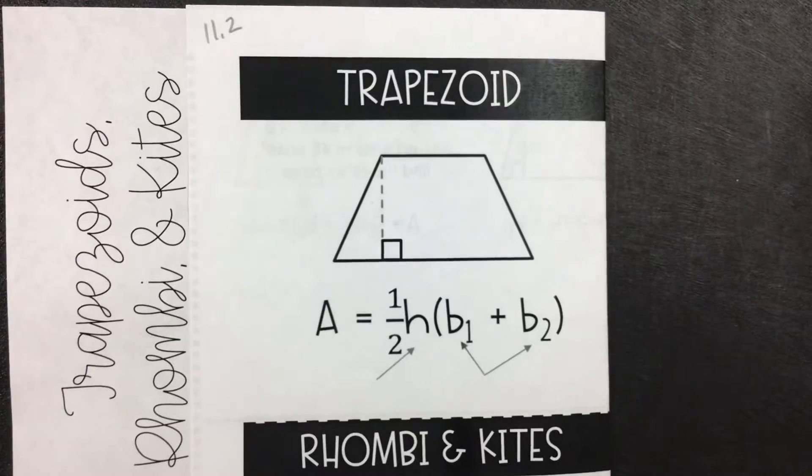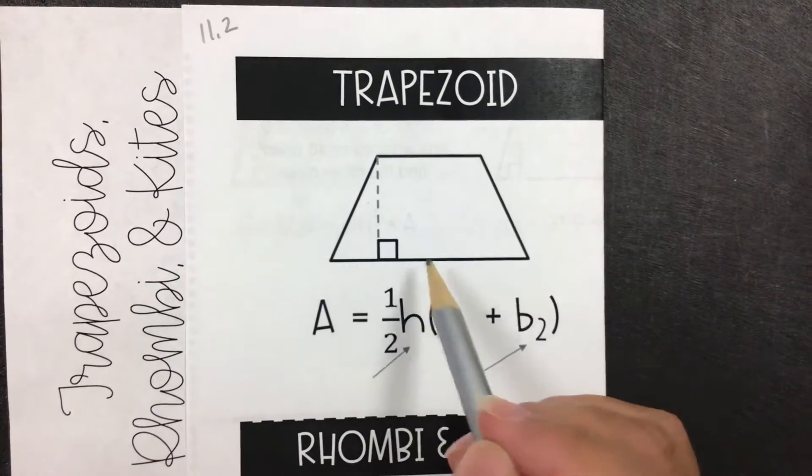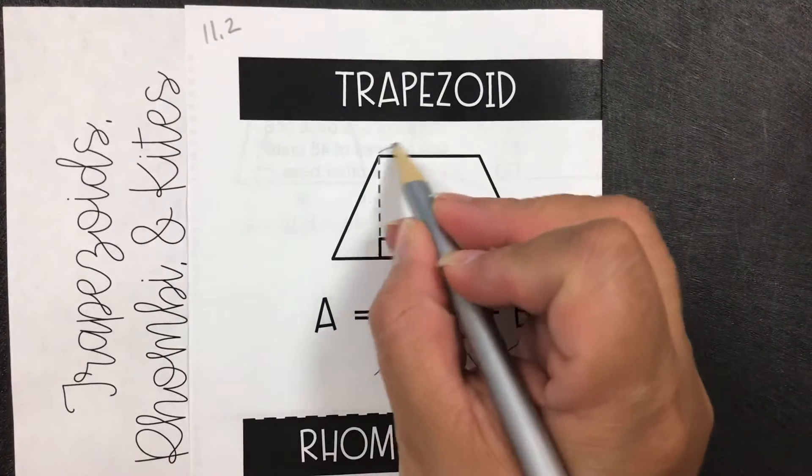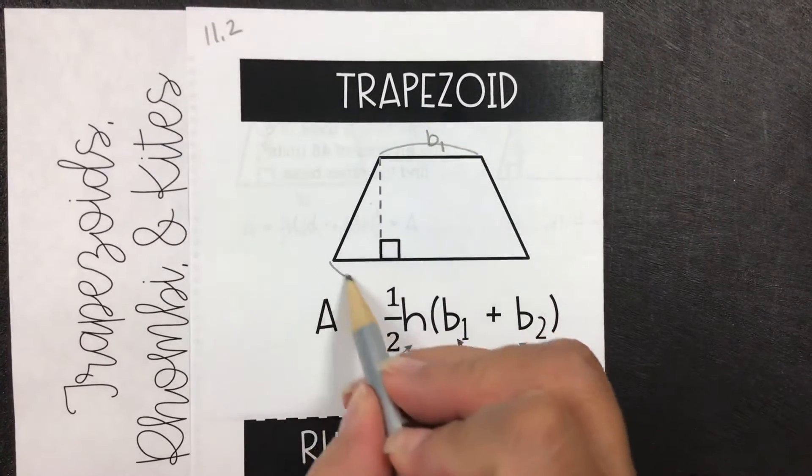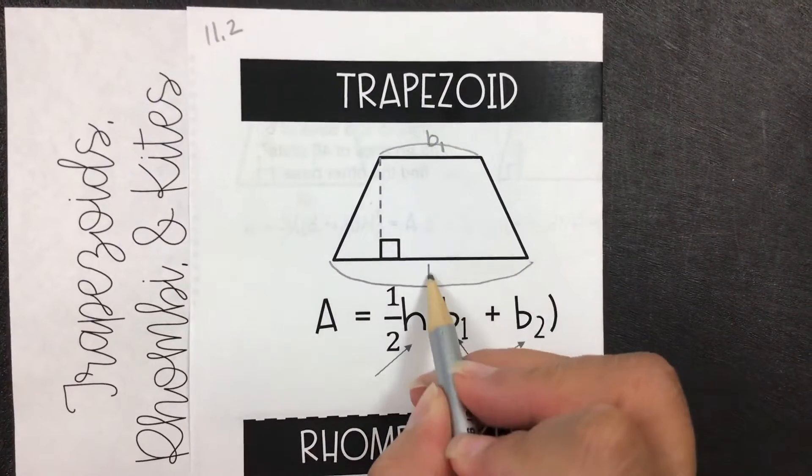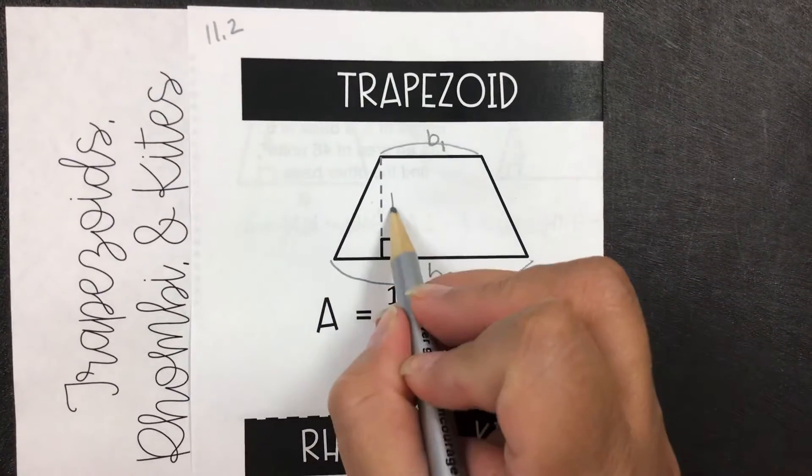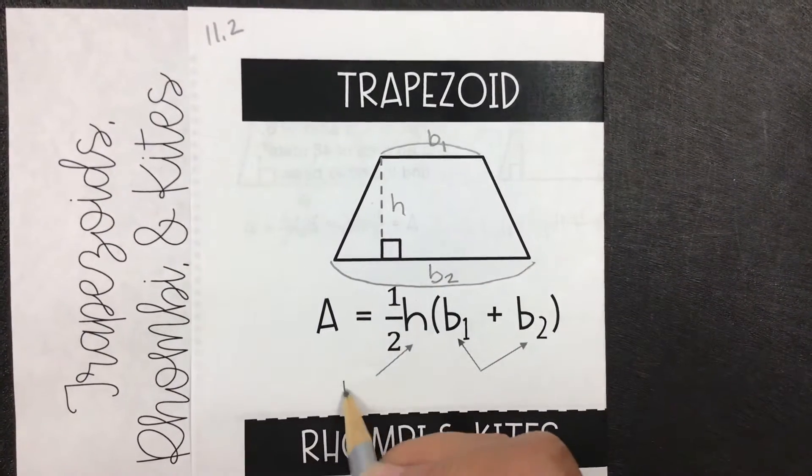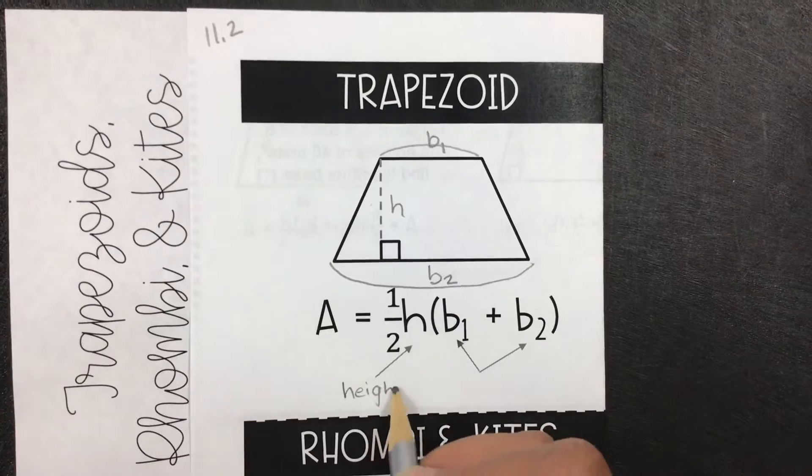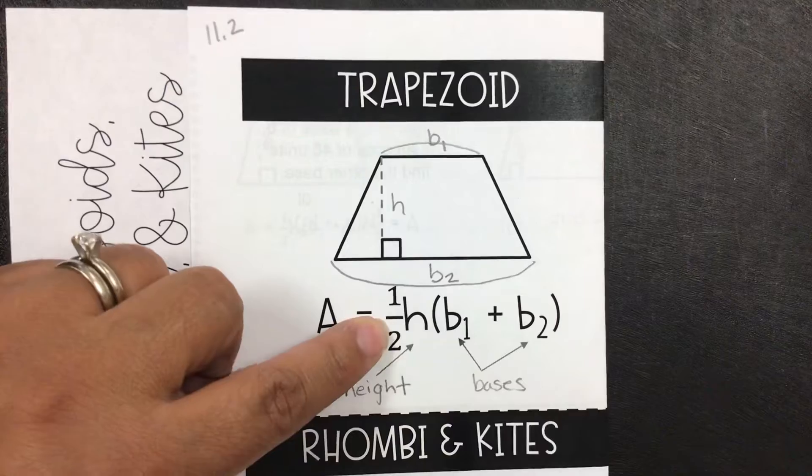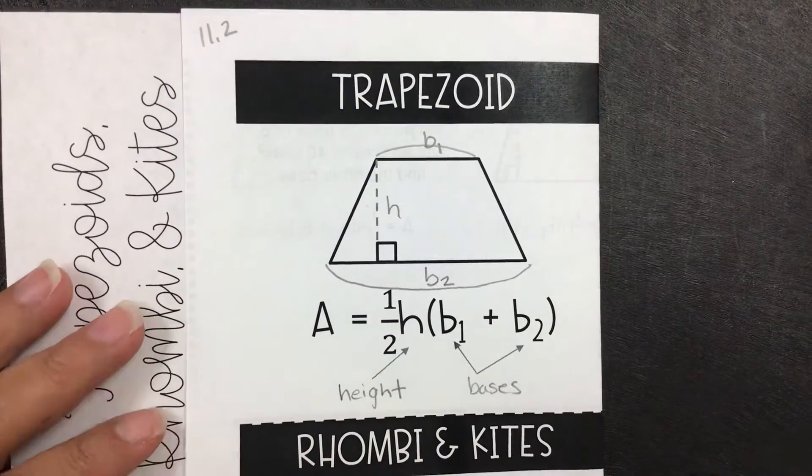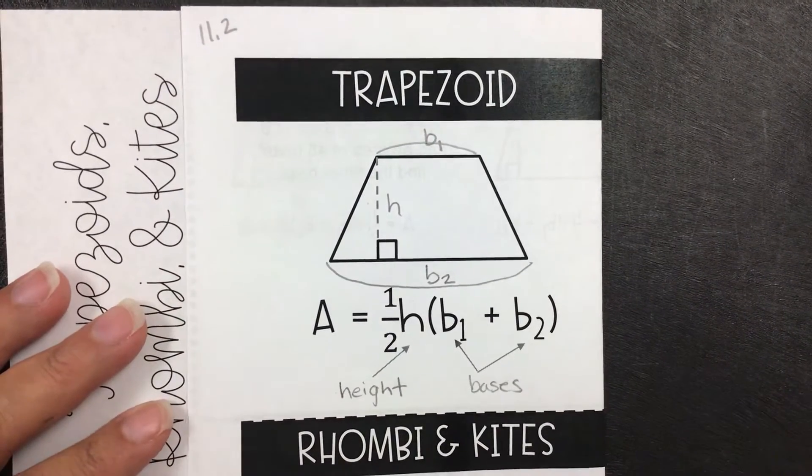The first one that we have is the trapezoid. This is considered one of the bases, so we're going to call it base 1, and then this whole thing is the other base, we're going to call it base 2. And over here would be the height. These are the bases. We're going to add them together, multiply by the height, and then divide it by 2 to get the area.